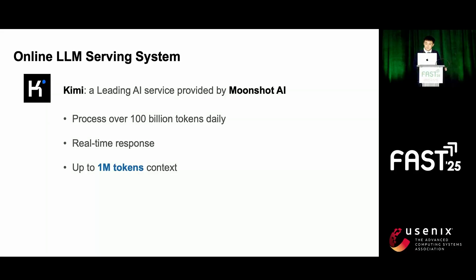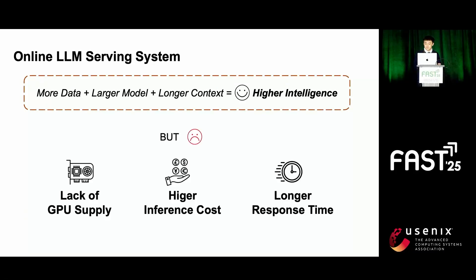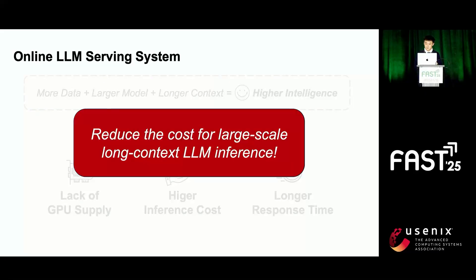Mooncake is the online LLM serving system that powers Kimi. Currently, Kimi serves millions of users, processes over 100 billion tokens daily, and delivers smooth real-time responses. One of Kimi's most popular features is its support for a context length of up to one million tokens. According to the scaling law, large models and longer contexts can lead to higher intelligence. However, this also increases inference costs and response latencies, especially during peak usage times. A natural question arises: how can we improve computational resource utilization and overall system throughput in large-scale long-context service scenarios, without compromising the user's experience?